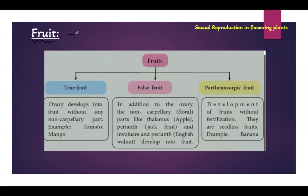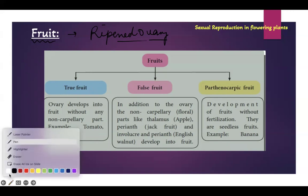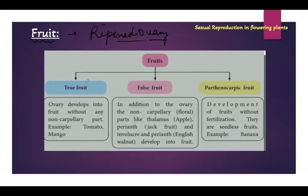Fruit is the ripened ovary - the ovary converts into a fruit. Fruits can be classified into various types depending on various features. First is true fruit: in a true fruit, the ovary develops into a fruit without any other part of the flower being involved, such as tomato and mango. In false fruit, any other part of the flower other than the ovary gives rise to the fruit.